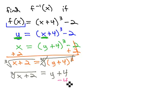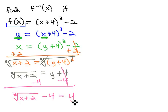We almost have y alone, we just have to subtract 4 from both sides. Again, these are not like terms. The 2 is under the radical, but 4 is not. And so, we just have to write the cube root of x plus 2 minus 4 equals y.